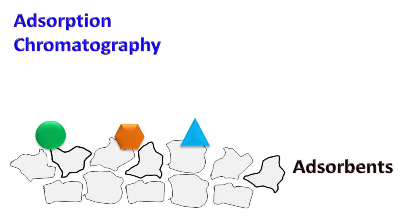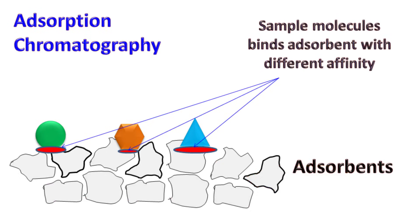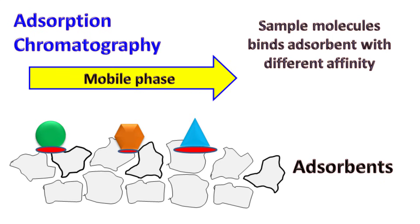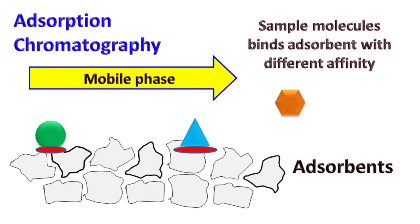Different sample molecules bind the adsorbent with different affinity. Hence, when the mobile phase is passed, the molecules having less interaction with the adsorbent are released first, while the molecules having more interaction with the adsorbent are released last.